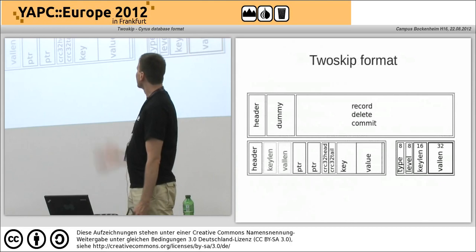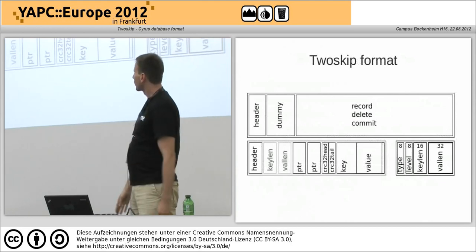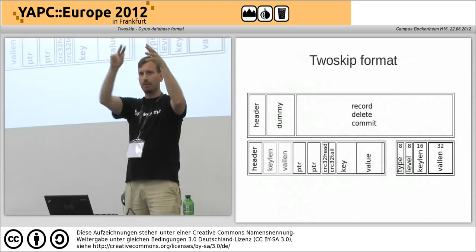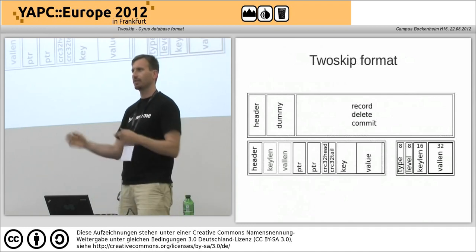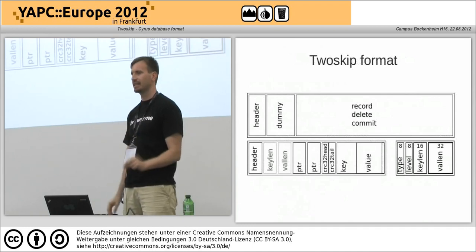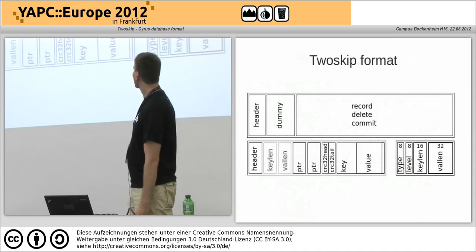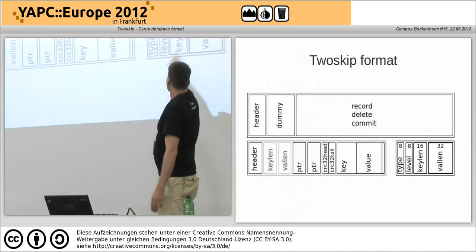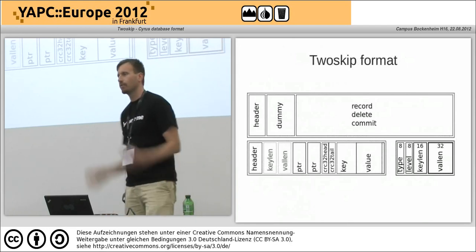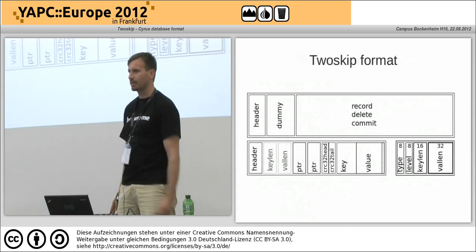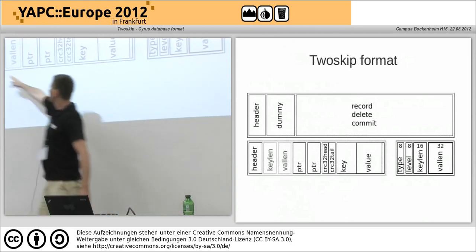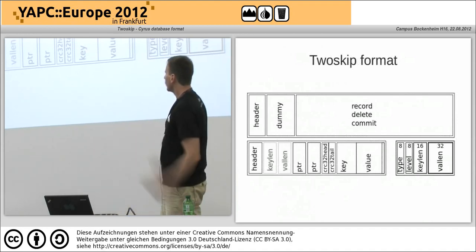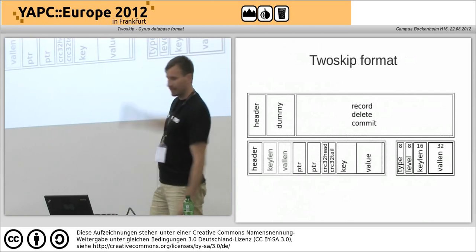This is the new file format. Some of the rubbish has gone away. I've simplified so that the dummy is just another record — the dummy's that first record with pointers to every single level. All the records are exactly the same format. They start with a very small header — just 64 bits — with four initial fields crammed in to try not to waste too much space. There are extension blocks if your key or value is bigger than 32 bits or 16 bits. All the pointers are at the start and there's a CRC at the start and a CRC at the end.